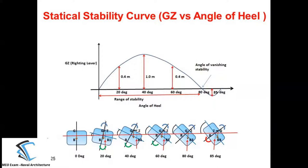As the ship is further inclined toward starboard, the center of buoyancy B2 shifts further toward starboard because the underwater volume is greater on that side. At 40 degrees angle of heel, the GZ value measured is 1 meter. At 60 degrees, however, it is found that the center of buoyancy starts shifting back toward the port (left) side — that point is B3 — and the GZ value decreases to 0.4 meters, meaning GZ is now starting to decrease.